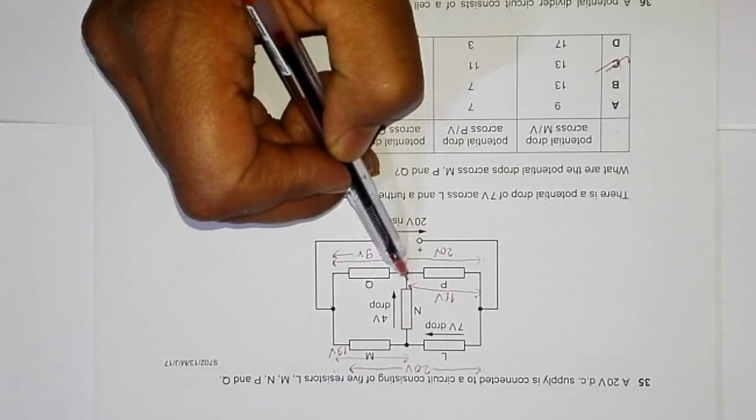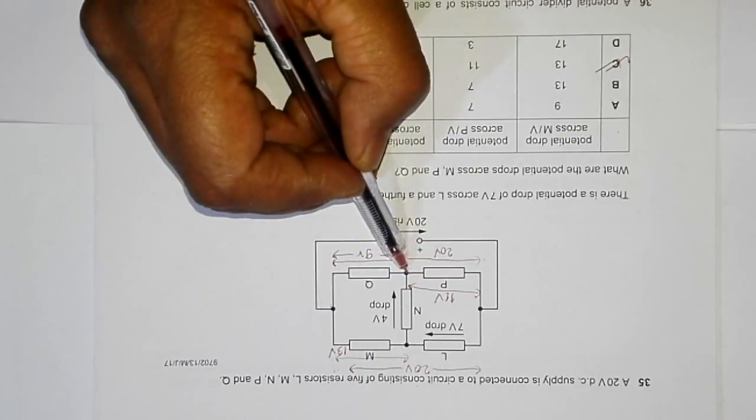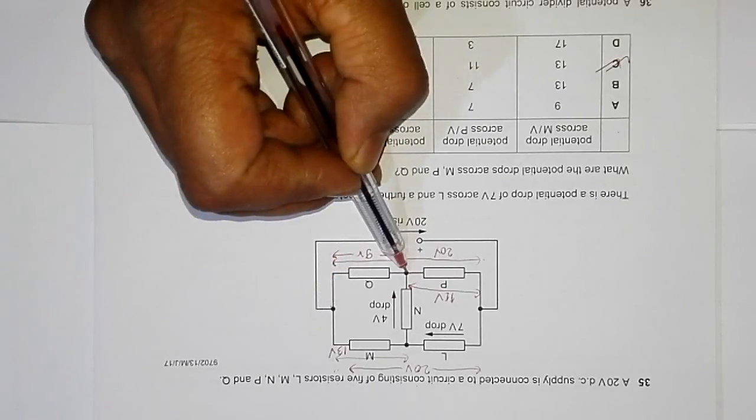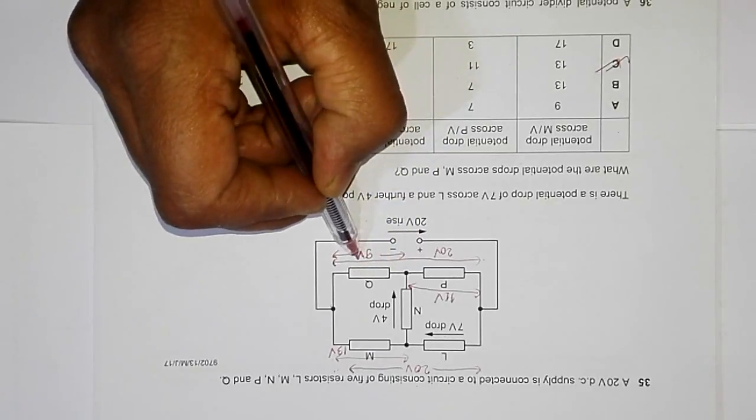Now since we have 4 volts here and since we have 13 volt here, the PD across these two points should be 13 minus 4 equal to 9 volt, which has been shown here.